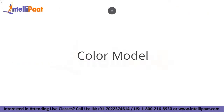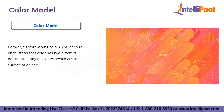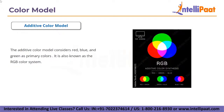Now let's discuss color models. Before you start mixing colors, you need to understand that color has two different natures: tangible colors, which are the surface of objects, and colors produced by light such as beams from a TV. These create two color models: the first is additive and the second is subtractive.